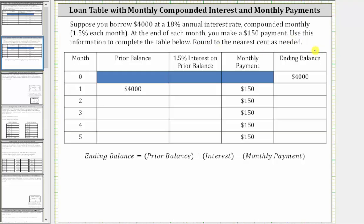Looking at the table, the ending balance at the end of month zero, which is right when you receive the money, is $4,000, which becomes the prior balance at the beginning of month one. Then during month one, you are charged 1.5% interest on the balance of $4,000, which means we need to find 1.5% of 4,000.